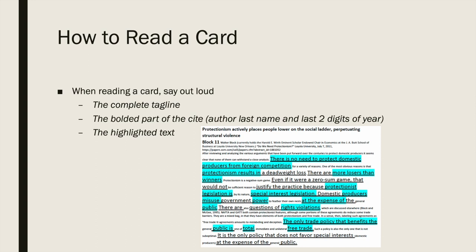The important parts are what you read out loud. But the other aspects — the full citation, the non-underlined and non-highlighted text — are all there to provide important context and give credit to the original author. You're only going to read the highlighted part out loud, in addition to the author's last name, the last two digits of the year it was written, and the tagline that you wrote yourself.